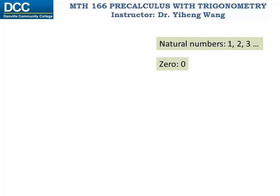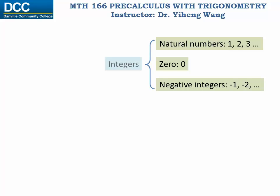And then we learned about zero, and then negative one, negative two, etc. They are negative integers, and all of them are known as integers.